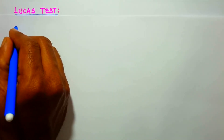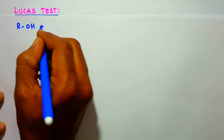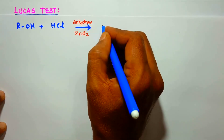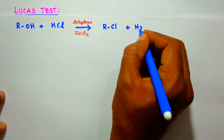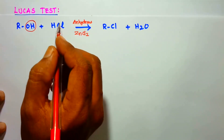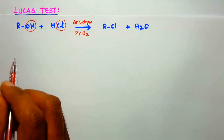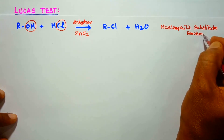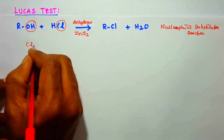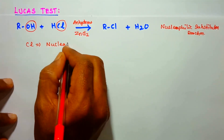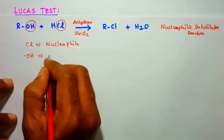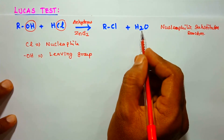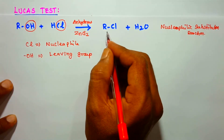In Lucas test, the alcohol reacts with concentrated hydrochloric acid in the presence of anhydrous zinc chloride to form alkyl chloride by elimination of water. The OH group leaves, and Cl is added. This type of reaction is called a nucleophilic substitution reaction, where Cl⁻ acts as the nucleophile and the OH group (as water) is the leaving group.